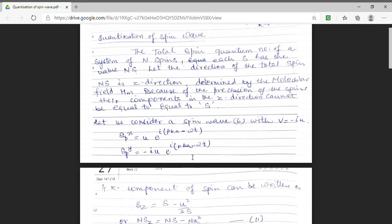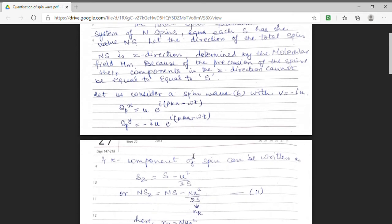And since the spin is not along Z direction because of precession, so we are taking the Z component to be SZ equal to S minus u square upon 2S.